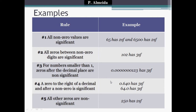Pay attention not to confuse rule 3 with rule 4. Rule number four says a zero to the right of a decimal place and after a non-zero is significant. So 0.640 has three significant figures — 6, 4, and 0 — because it's a zero to the right of a decimal place and after a non-zero value. Similarly, 64.0 has three significant figures because that zero is to the right of a decimal and after a non-zero. Finally, all other zeros are non-significant — for example, 250 has two significant figures.